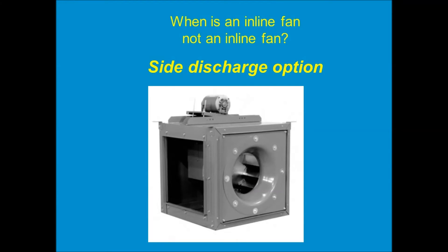This side discharge option is really handy in cramped mechanical rooms. A lot of times we see an inline fan installed right next to an elbow, which is a very poor inlet or discharge condition and causes a lot of unwanted turbulence. So instead of having a fan and then an elbow, let's just have the fan be the elbow — put the fan in the corner with the side discharge option, and the fan turns the air 90 degrees very efficiently with no loss of performance. Keep that in mind in a cramped mechanical room or plenum area.